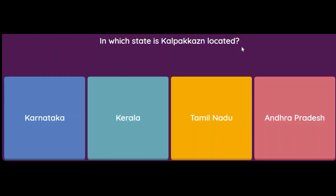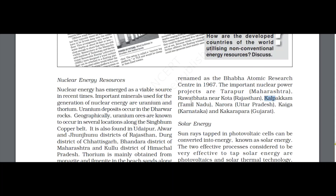In which state is Kalpakkam located — Karnataka, Kerala, Tamil Nadu, or Andhra Pradesh? The answer is Tamil Nadu. From the book: important nuclear power projects are Tarapur in Maharashtra, Rawatbhata near Kota in Rajasthan, Kalpakkam in Tamil Nadu, Narora in Uttar Pradesh, Kaiga in Karnataka, and Kakrapar in Gujarat.